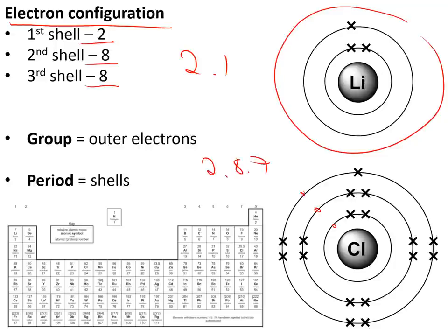Chlorine is written as 2.8.7. The group number tells us the number of electrons in the outer shell — so lithium is in group 1 and has 1 electron in the outer shell, and chlorine is in group 7 and has 7 electrons in its outer shell. The period number tells you the number of shells — lithium is in period 2 so it has 2 shells, and chlorine is in period 3 so it has 3 shells.